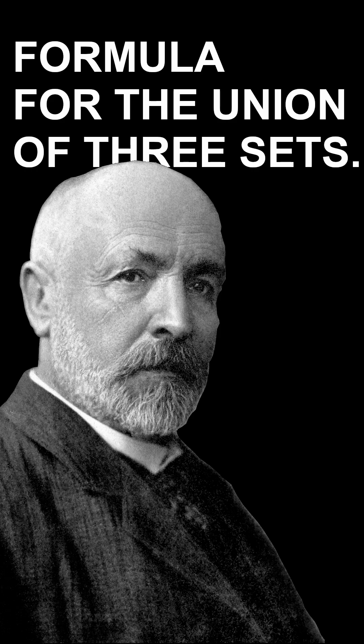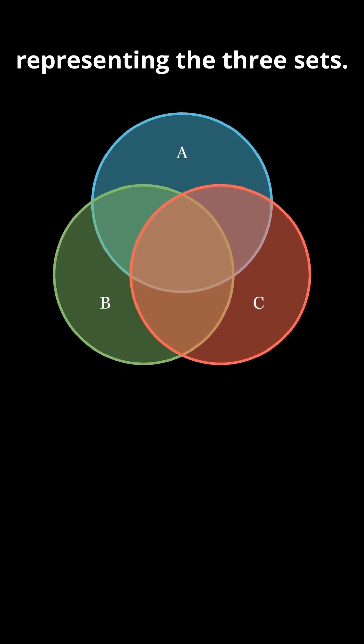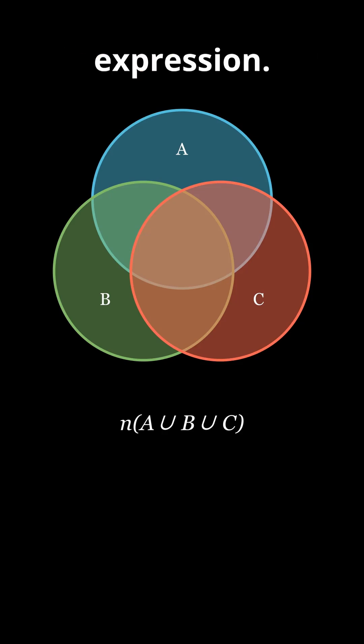Do you know the cardinality result for the union of three sets? Take this Venn diagram representing the three sets. Our goal is to find a formula for this expression.